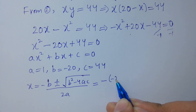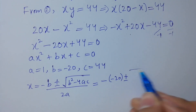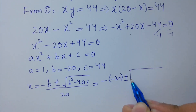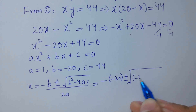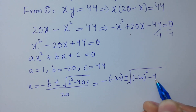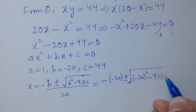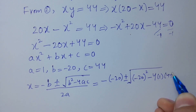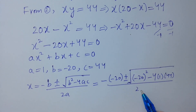b is minus 20, a is 1, and c is 44, over 2 times a which is 1. So we have x equal to 20 plus or minus square root of (minus 20) squared minus 4 times 1 times 44, over 2.